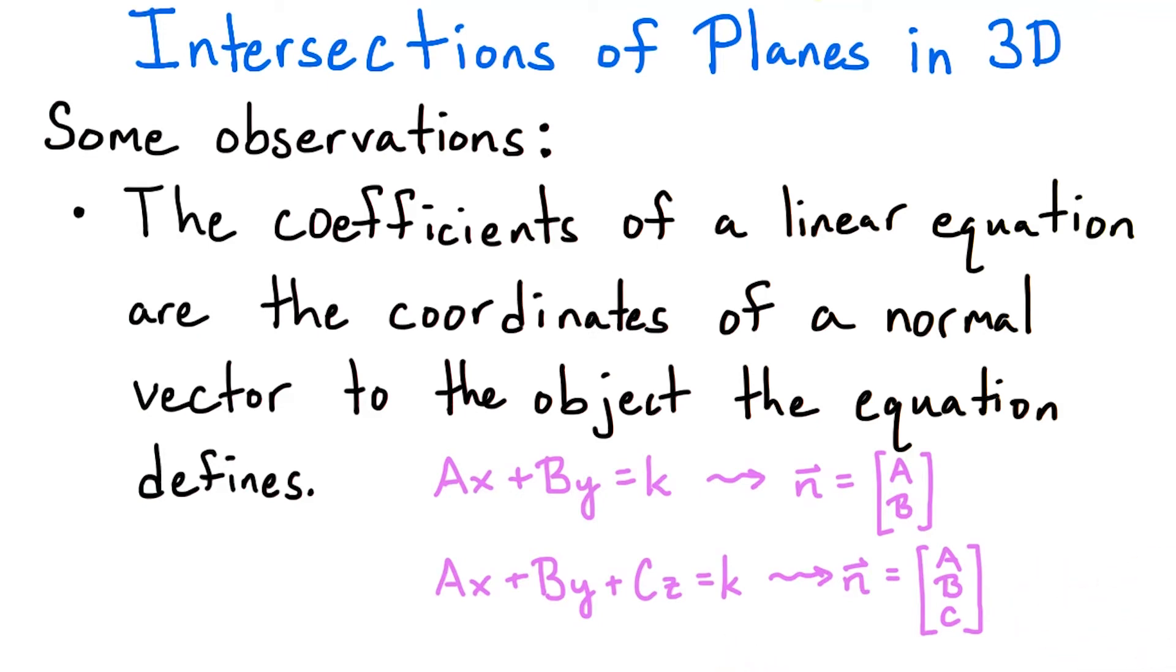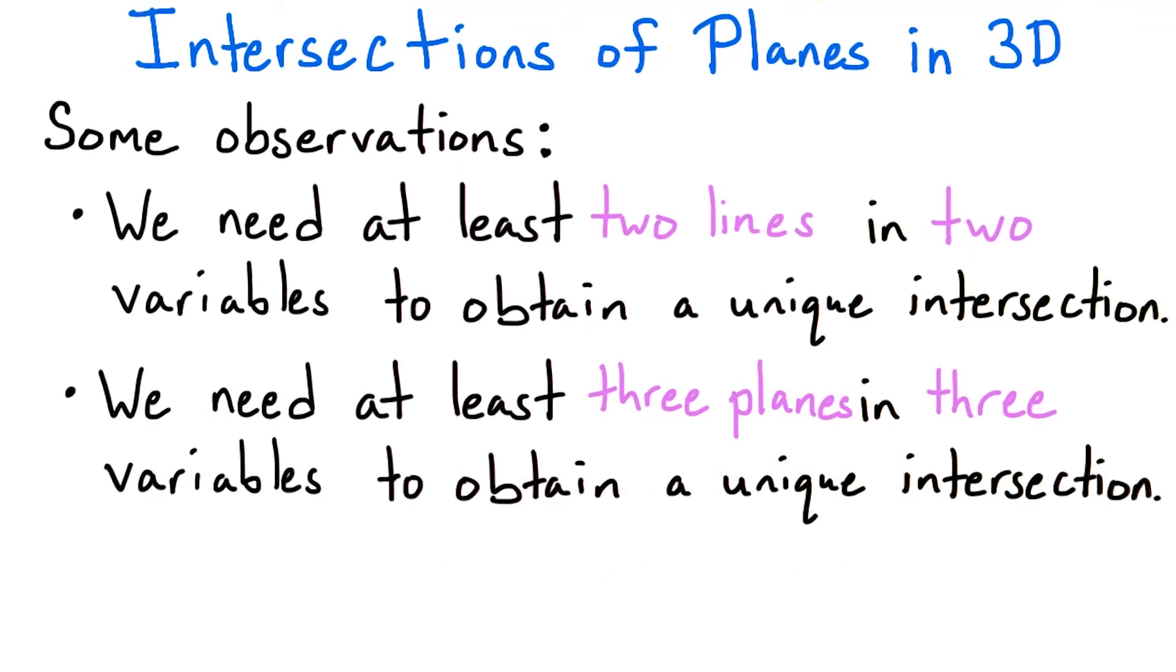This trend will continue as we move into higher dimensions, and again, this is why the normal vector is a useful piece of information for defining a linear object. One last observation is that we need at least two lines in two variables to obtain a unique intersection of lines, and we need at least three planes in three-dimensional space to obtain a unique intersection of the planes. This observation will generalize as we progress into higher dimensions, and in a little bit, we'll see an algebraic reason why it holds.